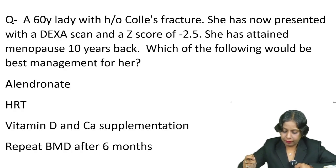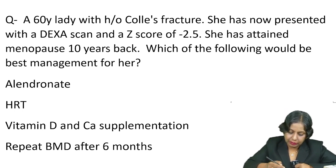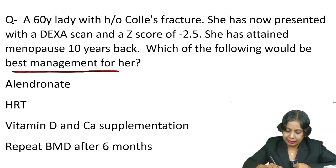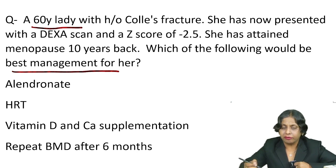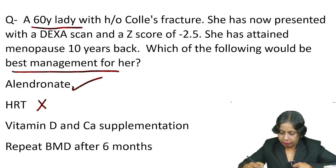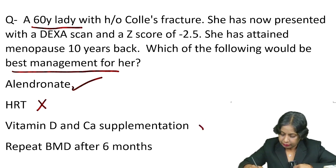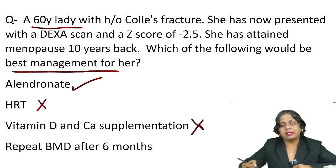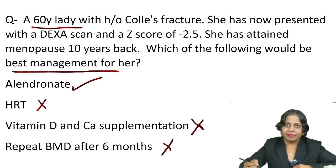So, our question was: what is the best management for menopausal osteoporosis in a 60-year-old lady? We cannot give HRT — it is contraindicated because it will risk the patient for cardiac diseases. We can give vitamin D and calcium, but that will not be the best management. There is no need to repeat bone mineral density after six months. So the best answer is alendronate.